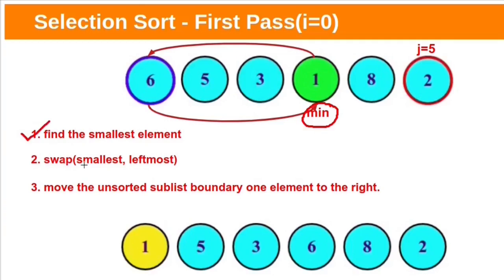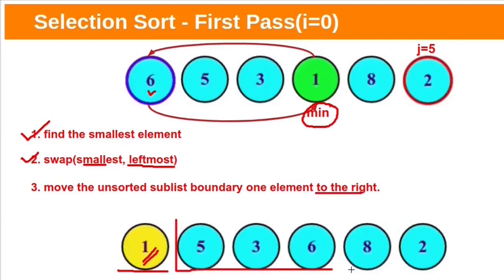We need to swap the smallest element with the leftmost element in the unsorted subarray — here it is 6. So we swap this smallest element 1 with the first element 6 in the unsorted subarray. After swapping, 1 is now at its correct position. This is the sorted sublist, shown in yellow. We then move the unsorted subarray boundary one element to the right. Three steps are completed.